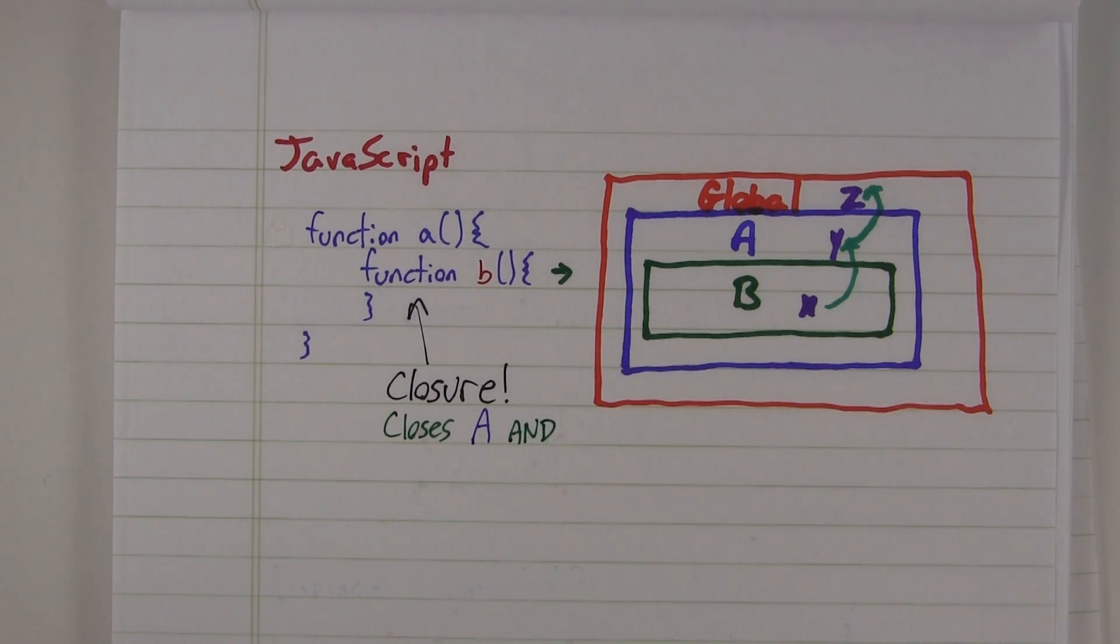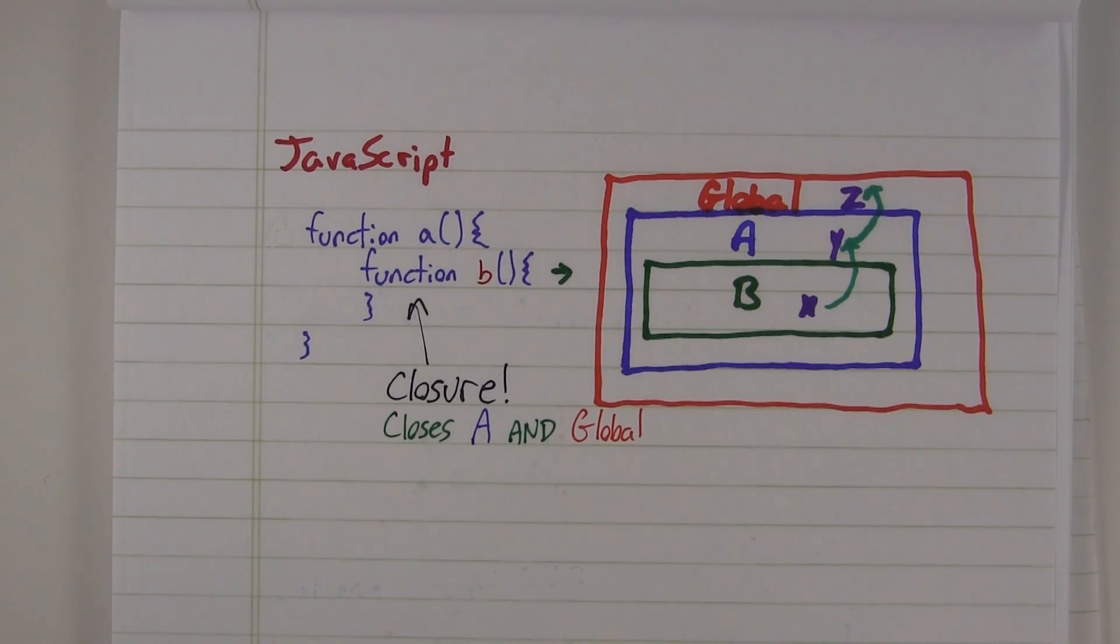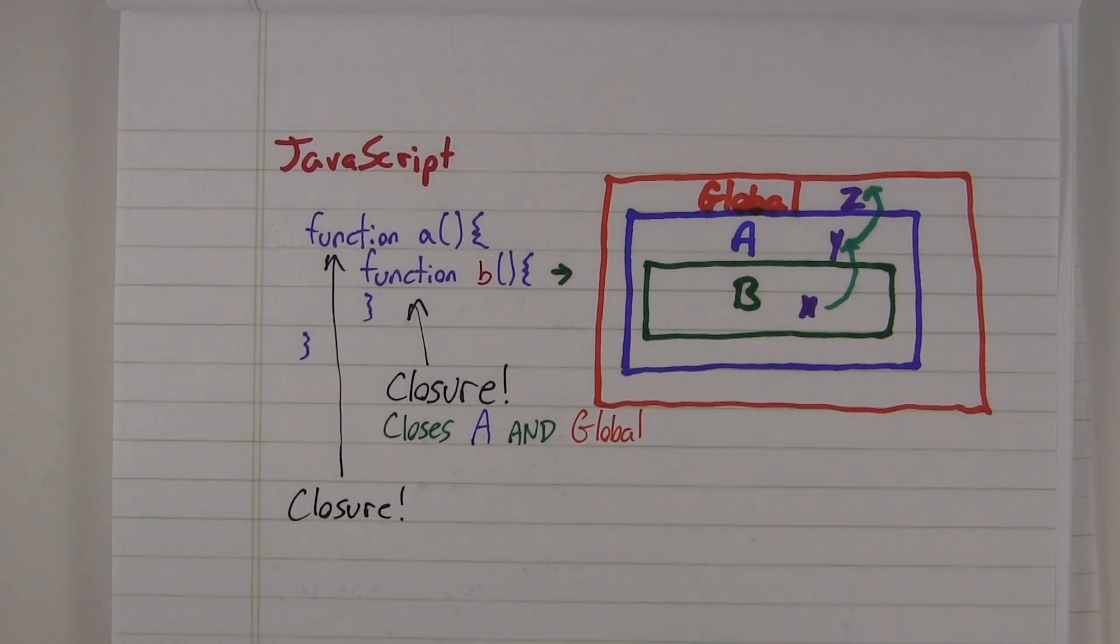And considering that the root scope is the global scope, all functions are nested inside of the global scope. Therefore, all functions in JavaScript are automatically closures.